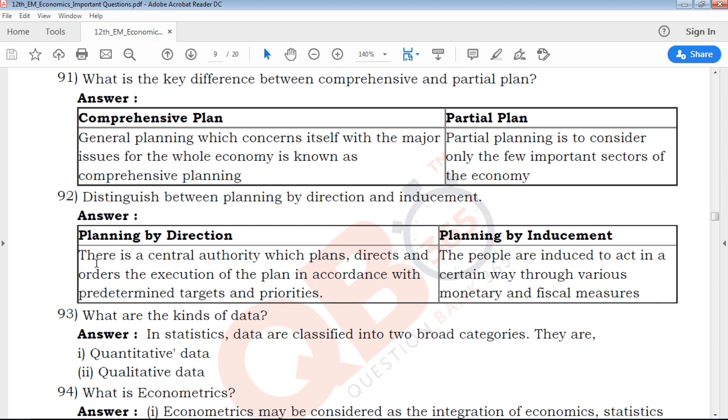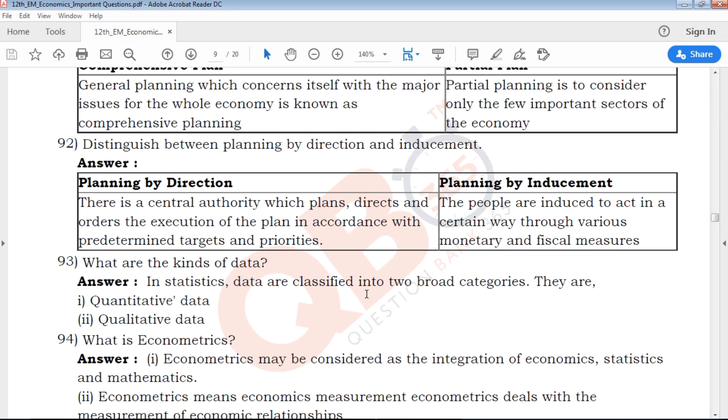In planning by direction, there is a central authority which plans, directs, and orders the execution of the plan in accordance with predetermined targets and priorities. Changes are made in terms of meaning. The people are induced to act in a certain way through various monetary and physical measures. So write the answers very carefully.